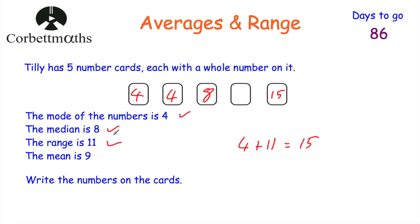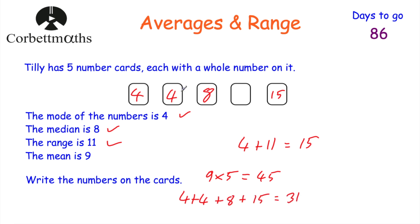Finally, we need to find the remaining number. The mean is nine, so if we add up all five values and divide by five we get nine. Working backwards: nine multiplied by five equals 45, so all the values must add to 45. Adding the numbers we've found: 4 plus 4 plus 8 plus 15 equals 31. So 45 take away 31 equals 14 — the missing value must be 14. The five cards are 4, 4, 8, 14 and 15. Well done if you got that right, particularly that last step — it gets a bit tricky.